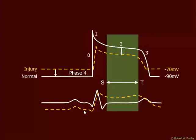EKG machines, however, are AC-coupled, which means they're going to determine the baseline — the diastolic period for the myocytes — and always correct it to zero. So we will never see a depression on an AC-coupled electrocardiogram. Rather, it will automatically adjust the baseline to zero, and all we'll then see is an ST elevation.